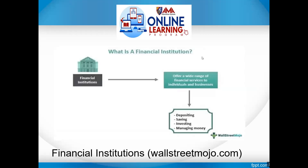This diagram from wallstreetmojo.com illustrates how a financial institution works. Whatever type it is, a financial institution offers a wide range of financial services to individuals and businesses — whether by depositing, saving, investing, or managing their money, and so on, depending on what they offer.